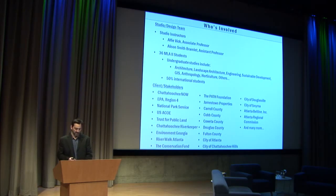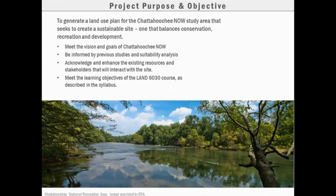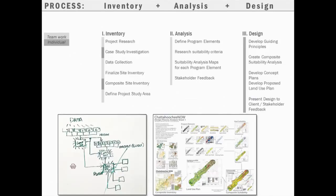The purpose of our project, as we described it to the students, was to generate a land use plan for the Chattahoochee River corridor. That plan had to seek a balance — drawn directly from the mission of Chattahoochee Now — balancing conservation, recreation, and development. Students also had to research and understand all the context and work done related to this corridor, engage stakeholders, and meet the learning objectives of our course within the framework of a geodesign process.